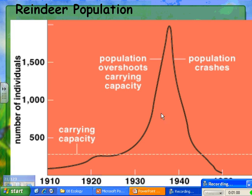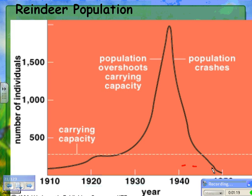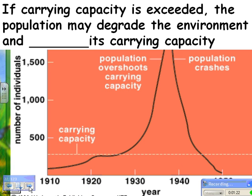Sometimes what will happen is they'll degrade their environment. While you have way too many for the environment, they'll actually kill off the things that they eat — so the trees will all die, they'll have stripped all the bark off the trees, or maybe they eat all the lichen. Then you have less food, and you can actually drop your carrying capacity to a lower number. So if carrying capacity is exceeded, the population may degrade or destroy the environment and actually decrease the carrying capacity so your numbers would be lower.